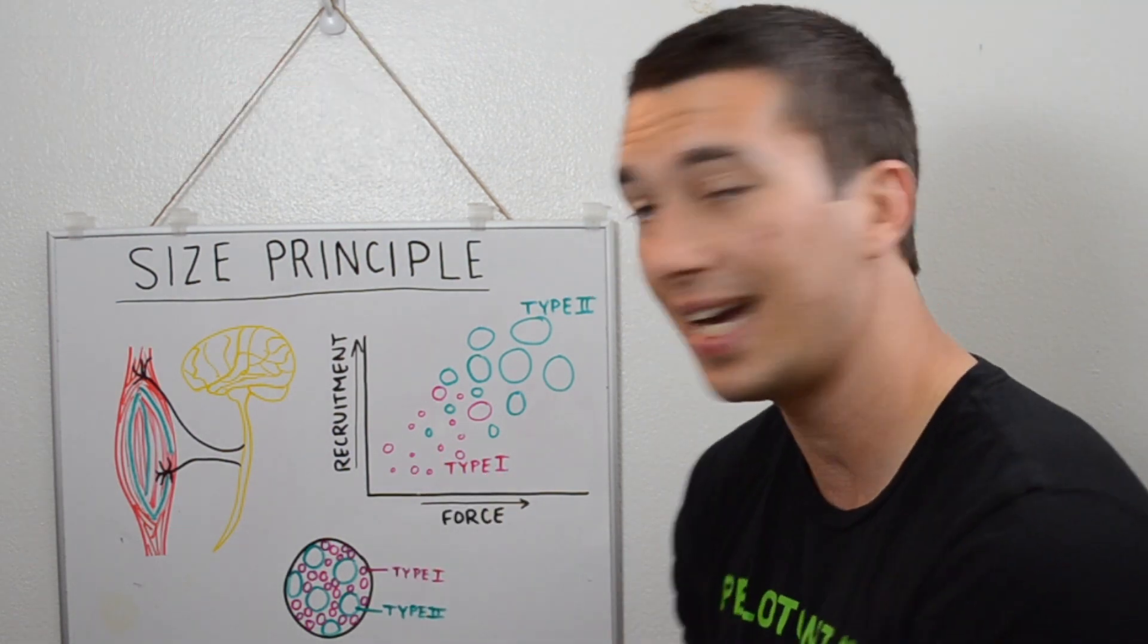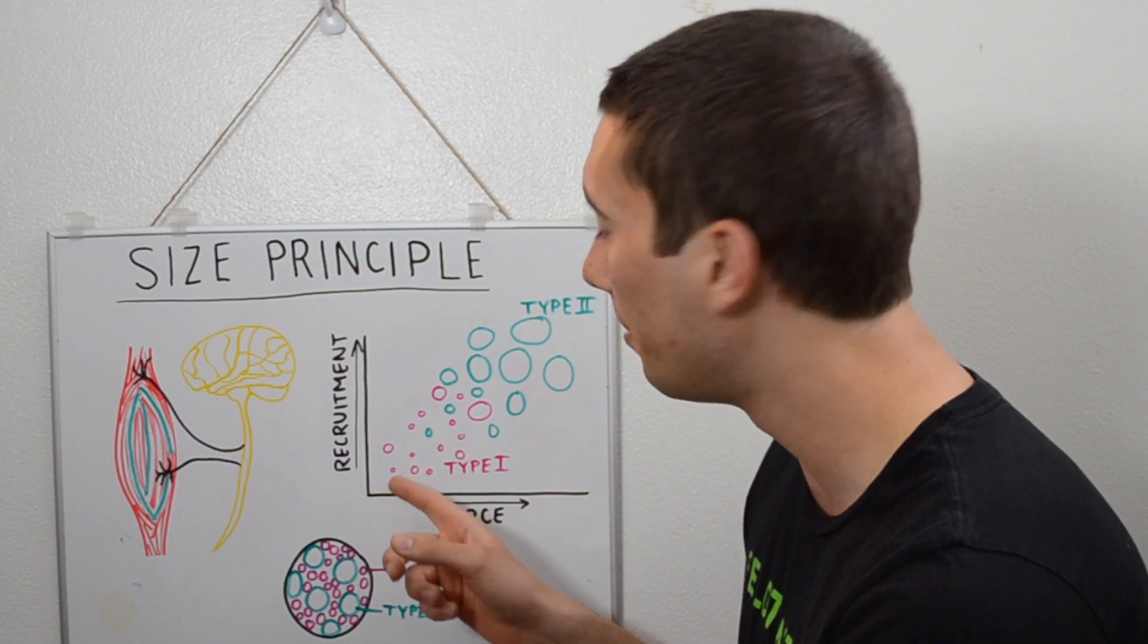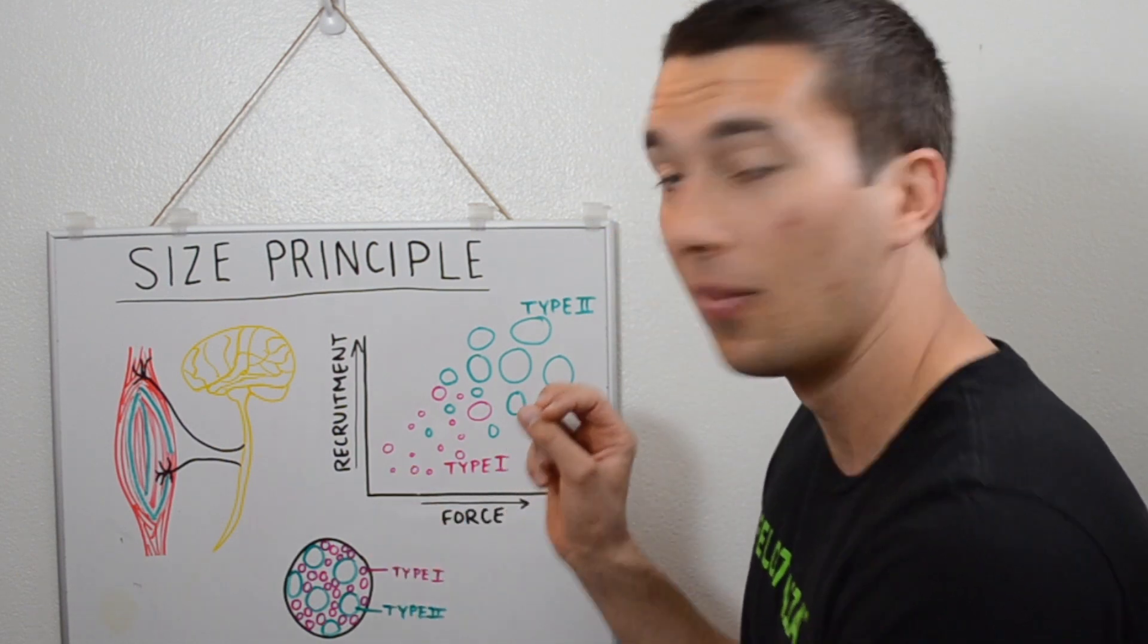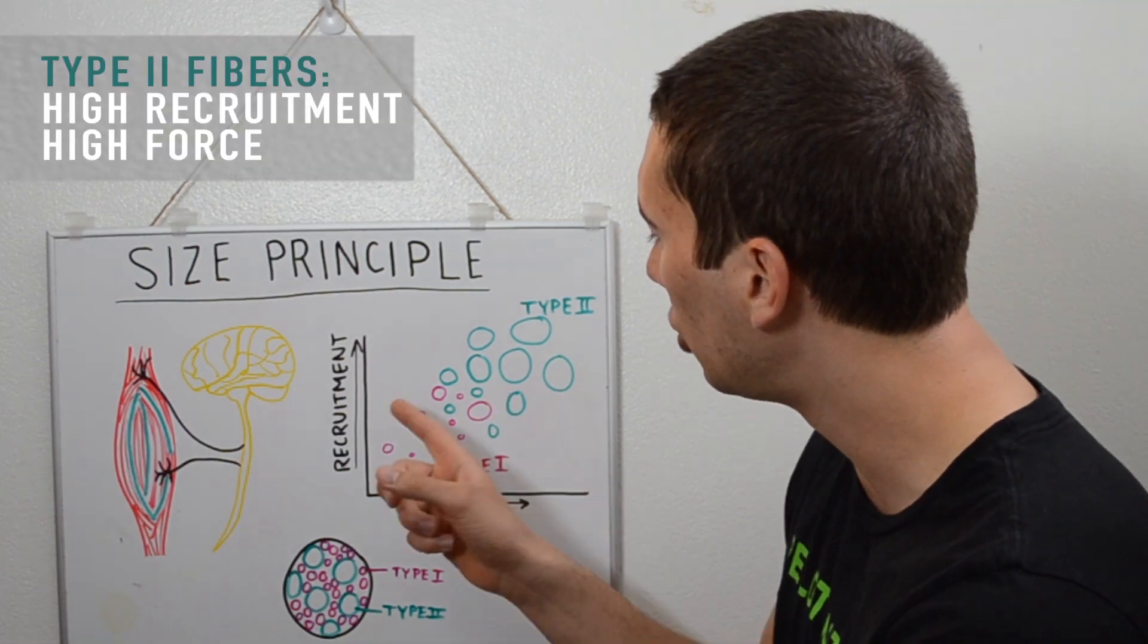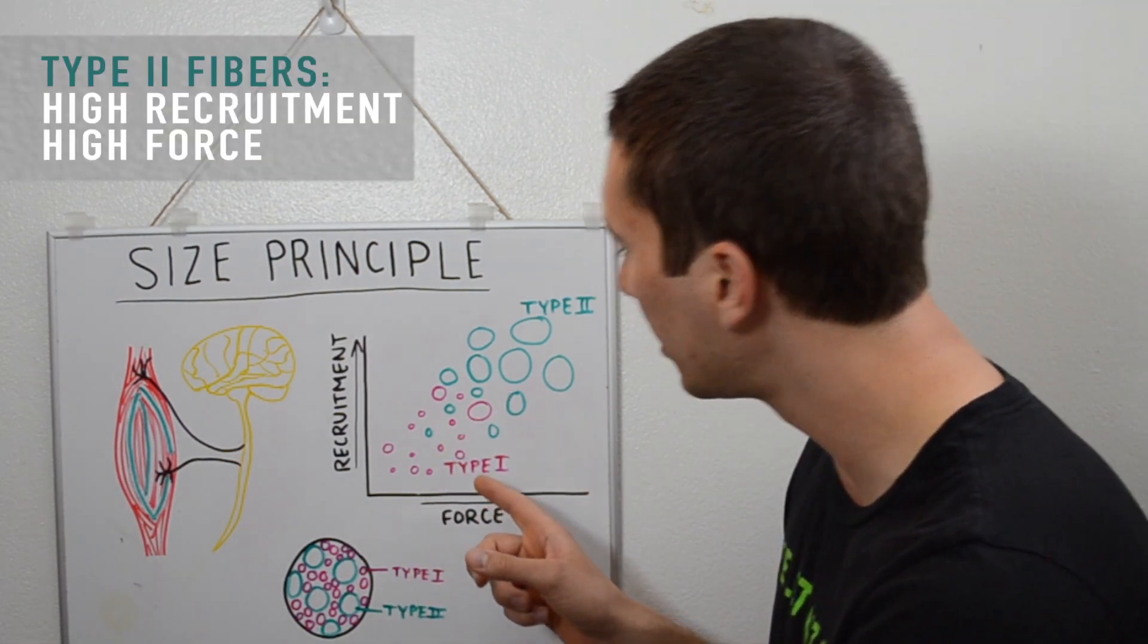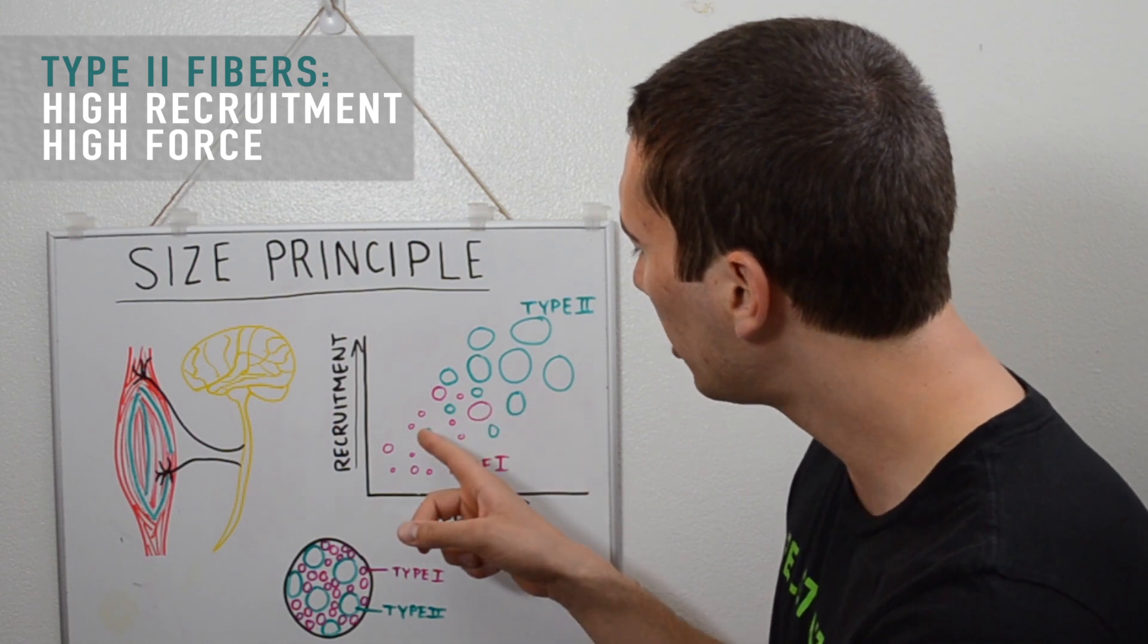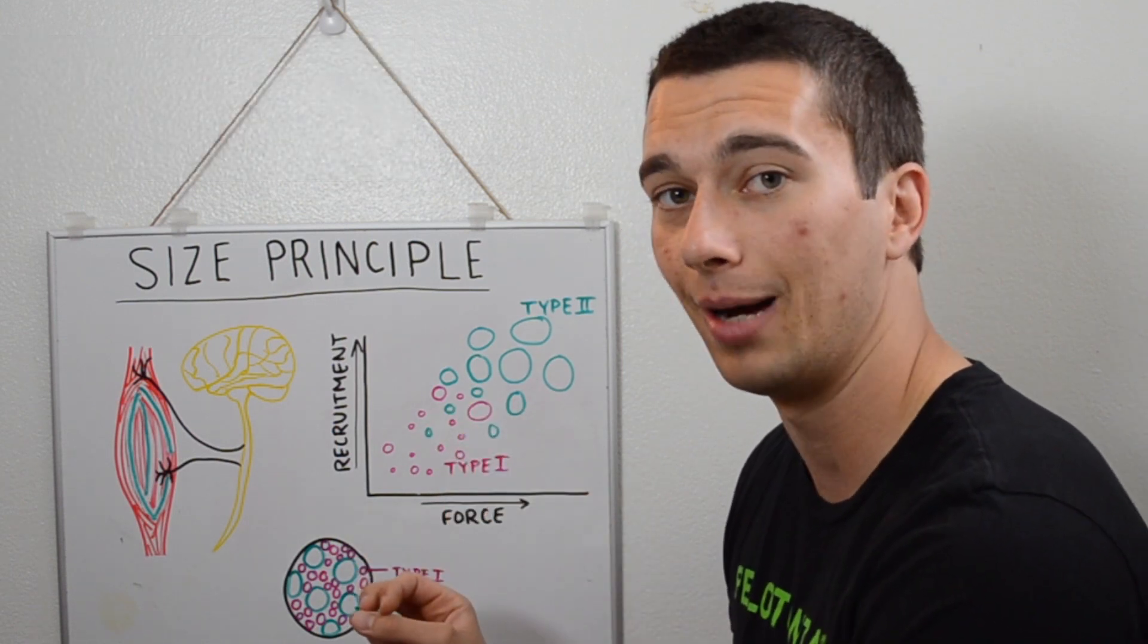As we're just moving day to day, we're just going to be using the type 1 muscle fibers. Whereas when we're moving larger heavier objects, something that's heavy, we might start to get into these type 2s. Higher force, say we have to pick up something heavy, we might start to work into these greens here, those type 2a fibers.